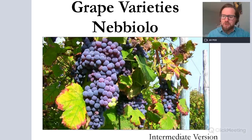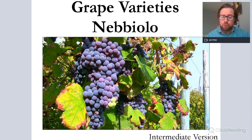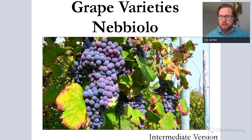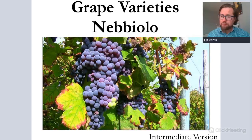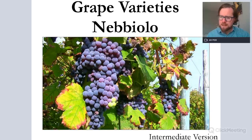Hello everybody, my name is Jimmy Smith and welcome to a great varieties on Nebbiolo. This is the intermediate version, very useful for WSET level two. If you are looking for more in-depth information about Nebbiolo — such as its etymology, viticulture, vinification, and history — please look at the advanced version which will be in the link in the description below the video. This is ideal for an intermediate level, so this is WSET level two.